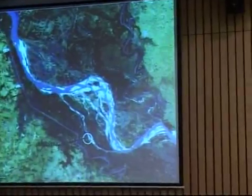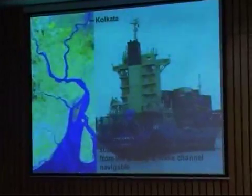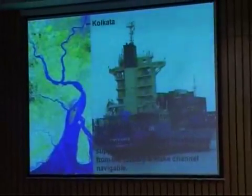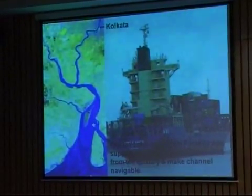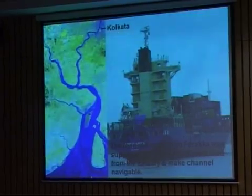The problem is that the Ganga at Farakka carries 800 billion tons of sediment load annually. When the flowing river water was intercepted, the river started to deposit the sediment load, the cross-sectional area reduced, and the river started to change its course. We had an expectation that the 40,000 cusecs of water would flush the sediment load and keep the channel free for navigation. But what happened to the river?